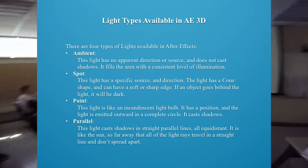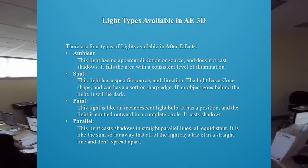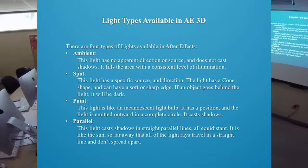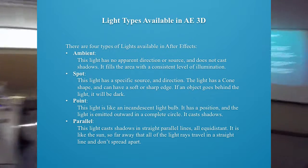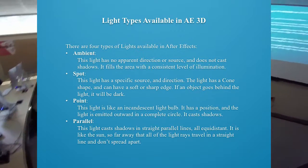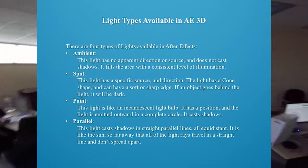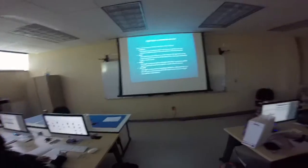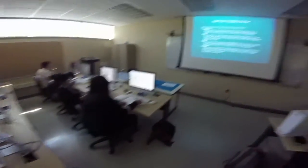A spotlight has a specific source and direction. It starts at one point and has a cone shape that gets wider as it gets farther away. It can have a soft or sharp edge. If an object goes behind the light, it will be dark. When you have spotlights and no ambient fill light, anything that goes behind the spotlight just goes completely black.